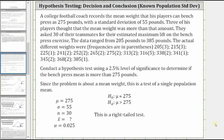Welcome to an example on how to perform a one-sample hypothesis test with a known population standard deviation. A college football coach records the mean weight that his players can bench press as 275 pounds with a standard deviation of 55 pounds. Three of his players thought that the mean weight was more than that amount. They asked 30 of their teammates for their estimated maximum lift on the bench press exercise. The data ranged from 205 pounds to 385 pounds. We are asked to conduct a hypothesis test using a 2.5% level of significance to determine if the bench press mean is more than 275 pounds.